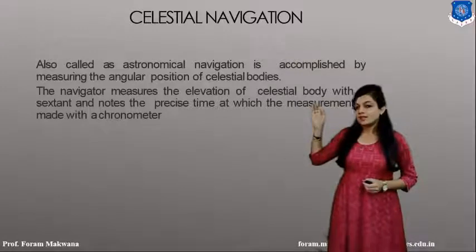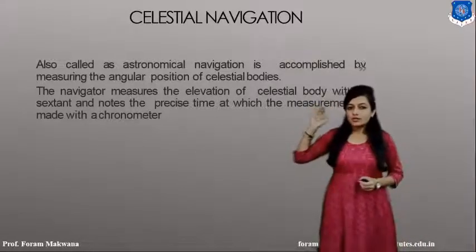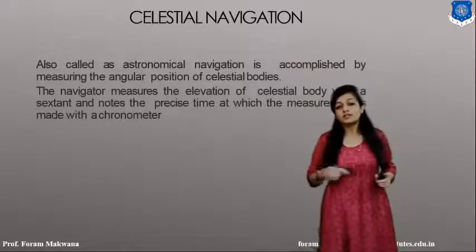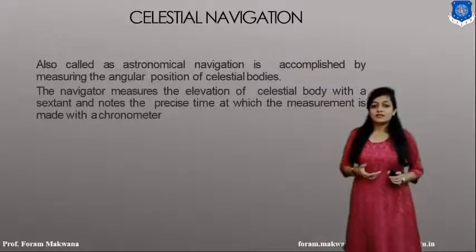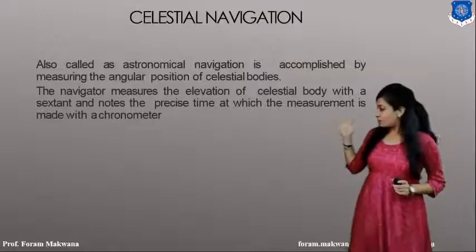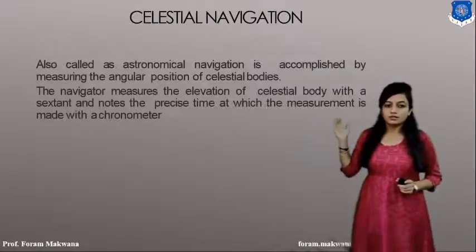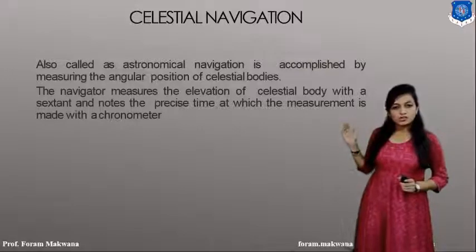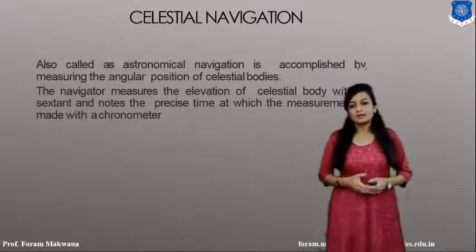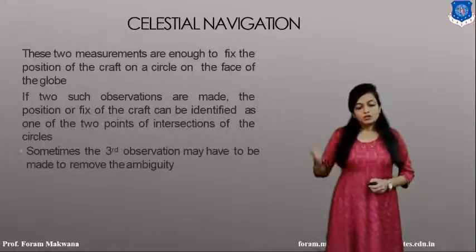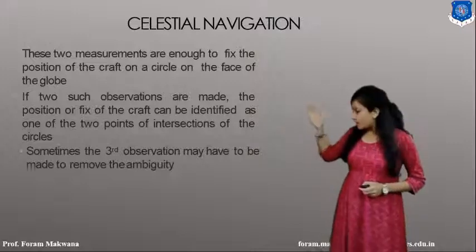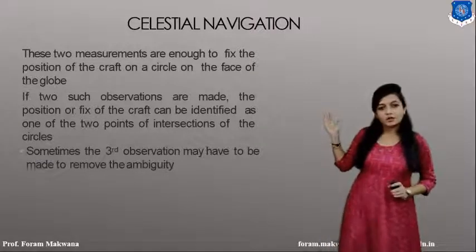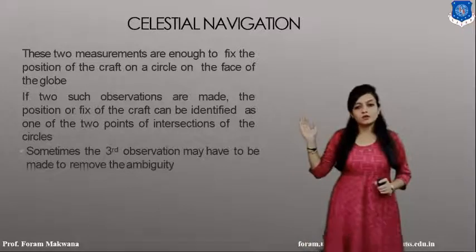The second method is celestial navigation, also known as astronomical navigation, which is accomplished by measuring the angular position of celestial bodies. The navigator measures the elevation of a celestial body using different devices, along with the precise time at which the measurement is made, in order to direct the aircraft. In celestial navigation, we need to take two measurements which are far enough apart to fix the position of the aircraft on a circle on the face of the globe.